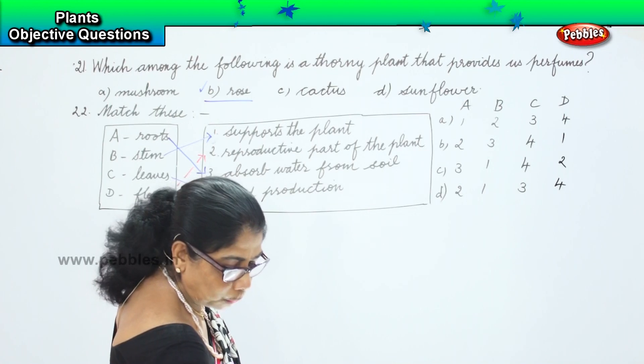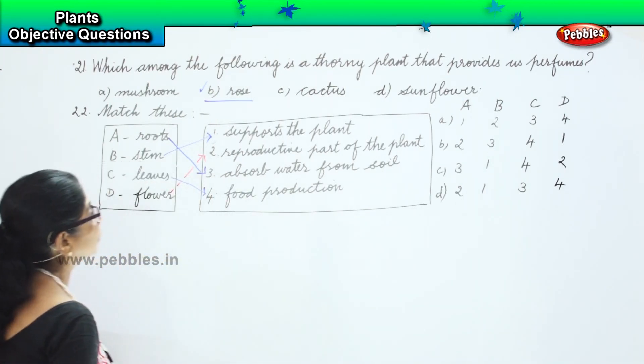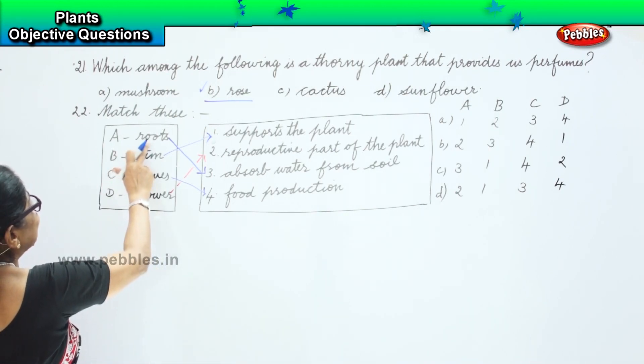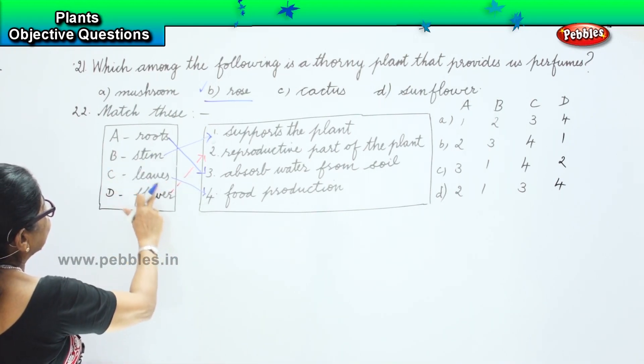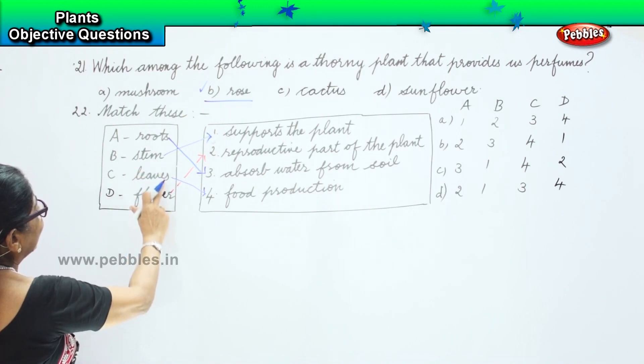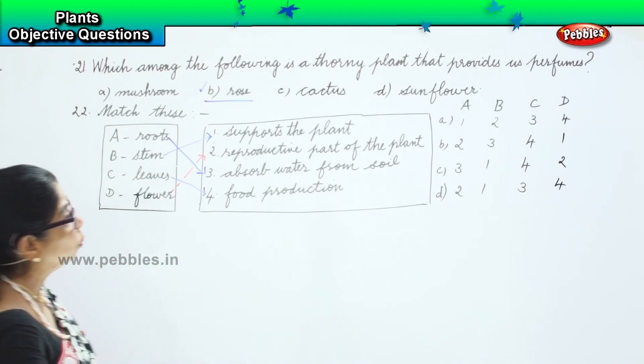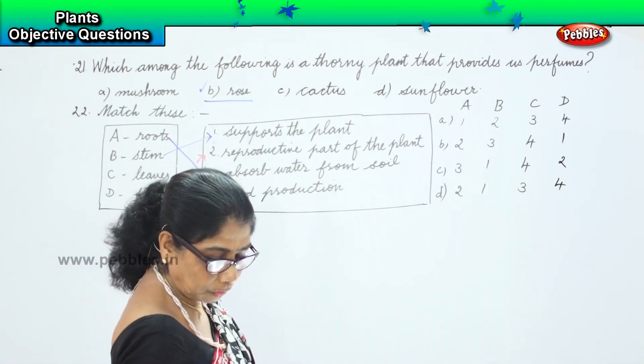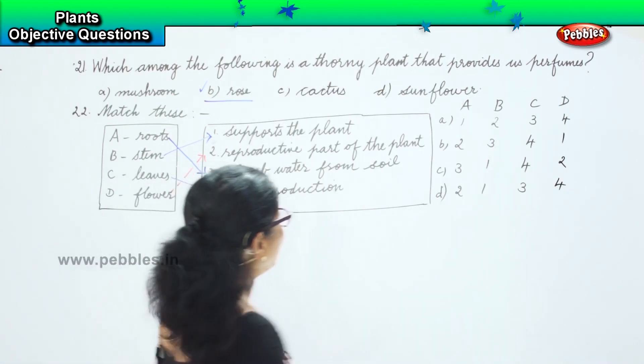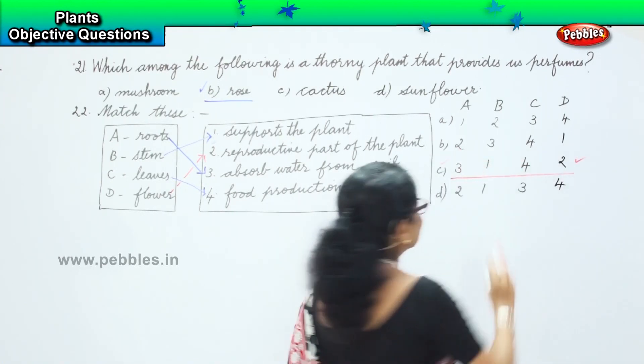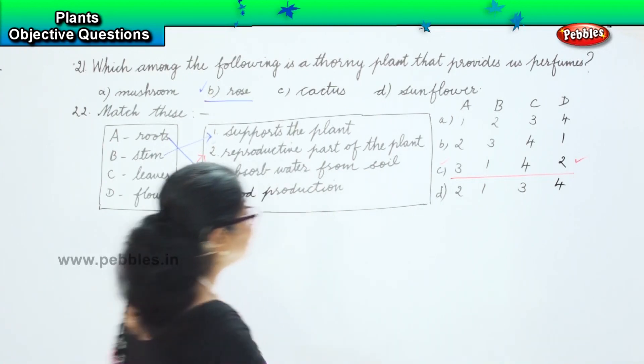Now, we have done the matching. Let us look at which option is correct. There it is 3, 1, 4, 2 is the correct answer. Option C, this is the correct answer.